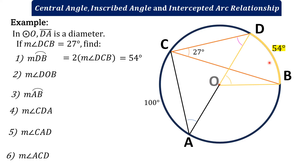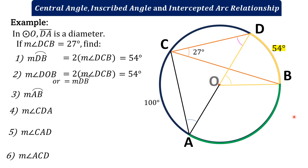Number 2: find the measure of angle DOB. This angle is a central angle because its vertex is the center, and its intercepted arc is the same as inscribed angle DCB, which is arc DB. Therefore, the measure of angle DOB equals 2 times the measure of angle DCB, which is 54 degrees.